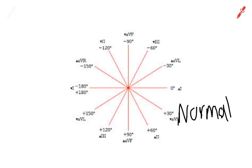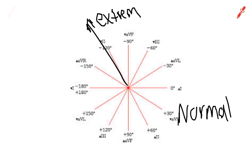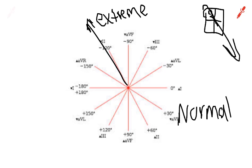Say they were both negative — both Lead 1 and AVF are negative. It's going away from Lead 1 and away from AVF, so it has to be doing this — and this is called extreme right axis deviation. This is very rare, because what it means is the signal is literally going backwards. The SA node is up in the right-hand part of the heart, and the signal is literally going the wrong way. You want it going the normal way — that's normal axis deviation.